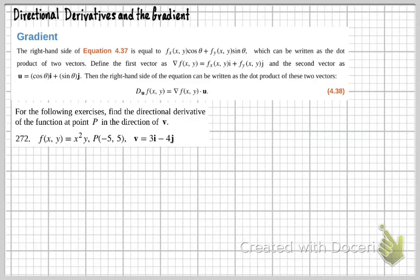It says, for the following exercises, find the directional derivative of the function at point P in the direction of V. Okay, so this here is going to be the formula I use. The gradient of F dot U. One thing that we're going to talk about first here, U has to be a unit vector.